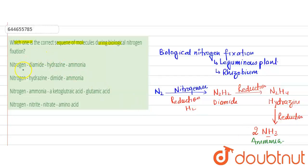So the correct sequence of this nitrogen cycle is nitrogen, diamide, hydrazine, and ammonia.